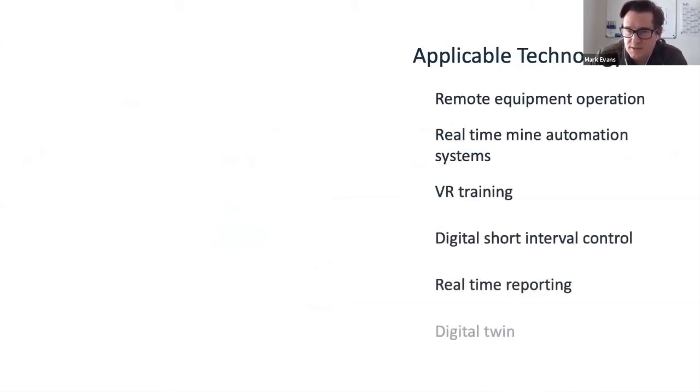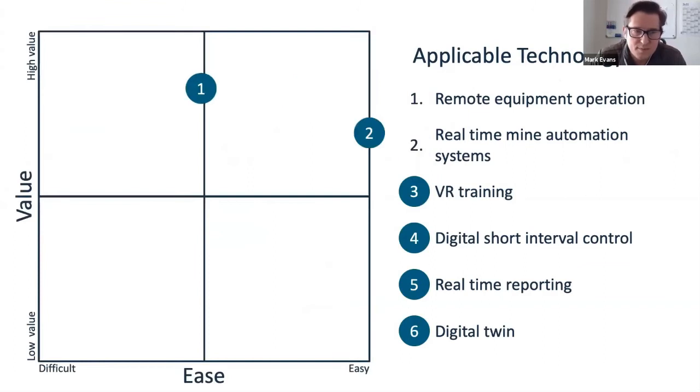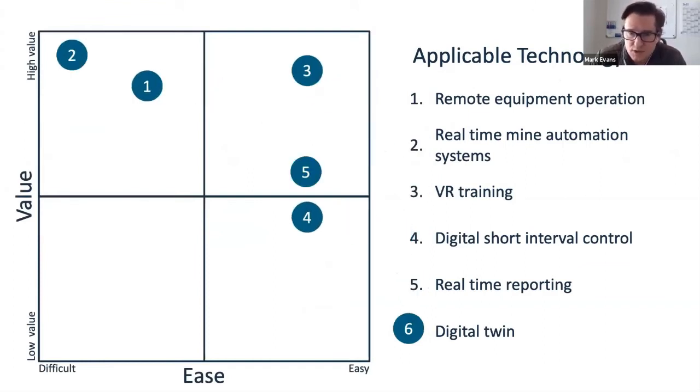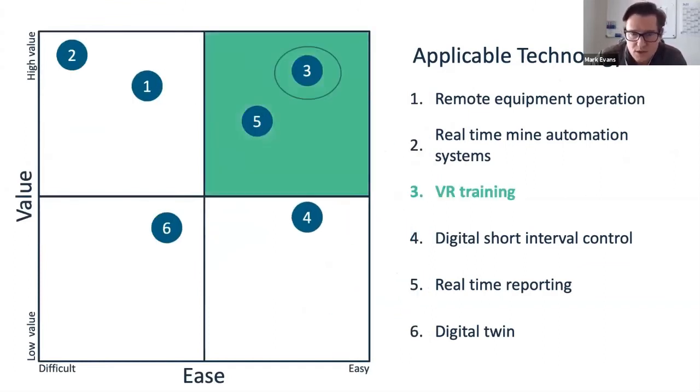Next step would be understanding what sort of technologies are available to address operator skill. Real-time monitoring, short interval controls, digital twins, lots of technologies available. Then it's a matter of understanding which one is going to provide you the highest value given your circumstances and which is easiest to implement.